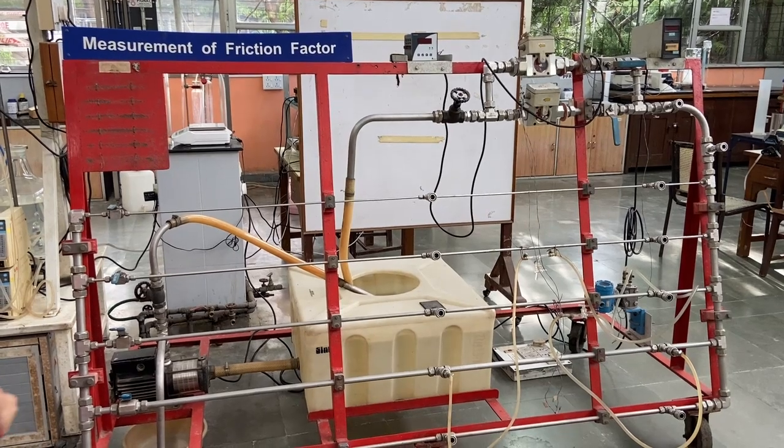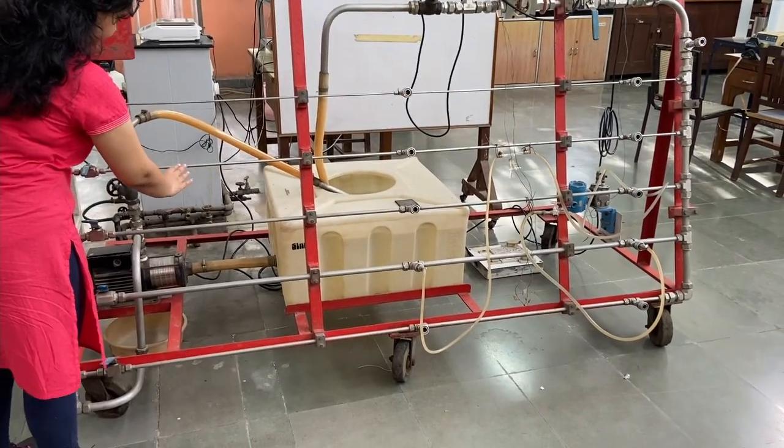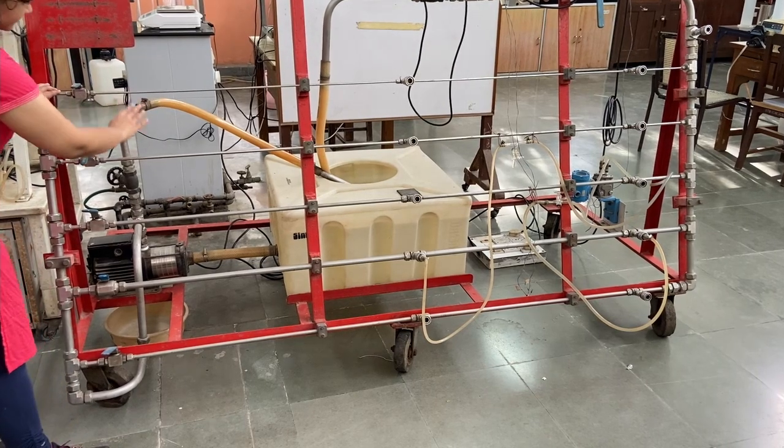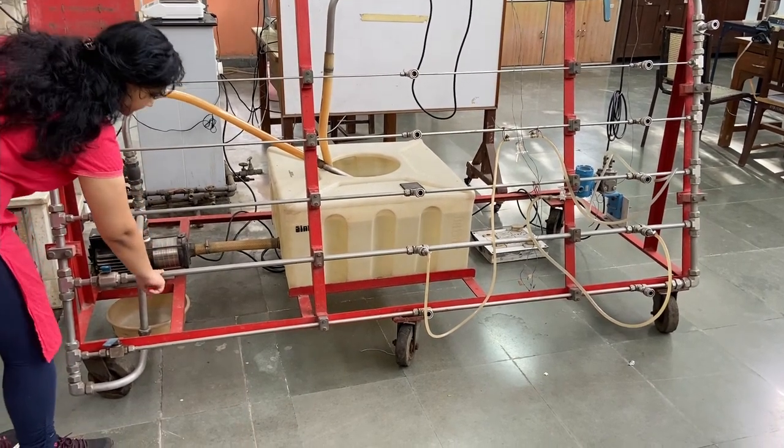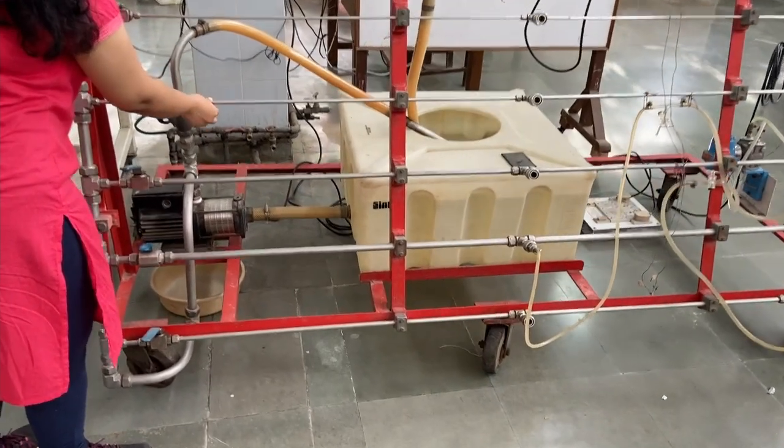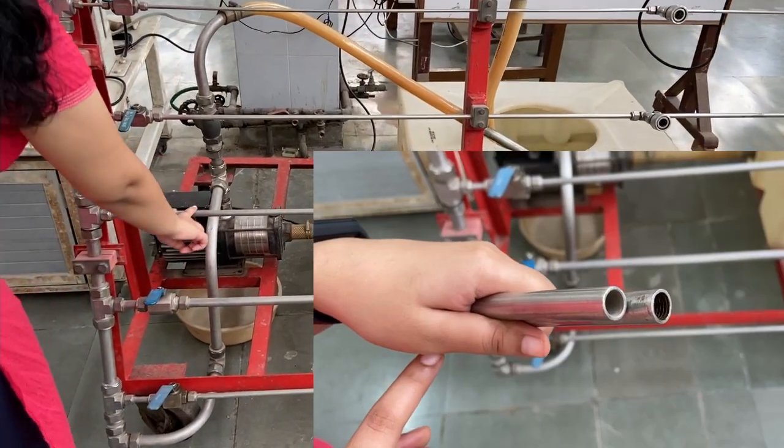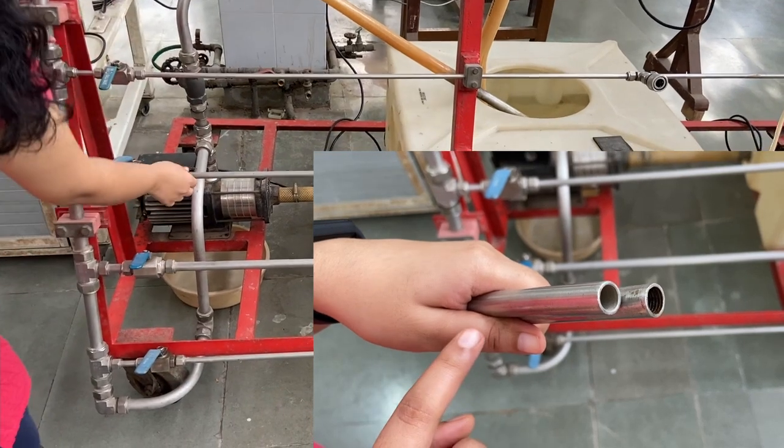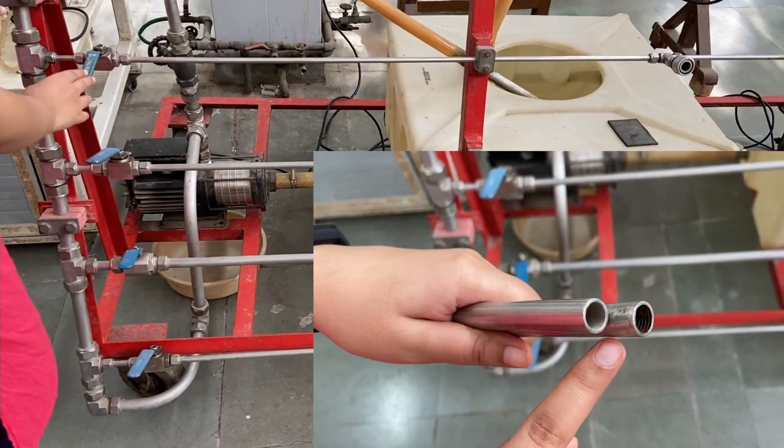These are the pipes used to perform our experiment, numbered from top to bottom as pipes 1, 2, 3, 4, and 5. Each of these have different diameters and roughness factors. Pipes 3 and 5 have the same diameters but they differ in their roughness parameter.